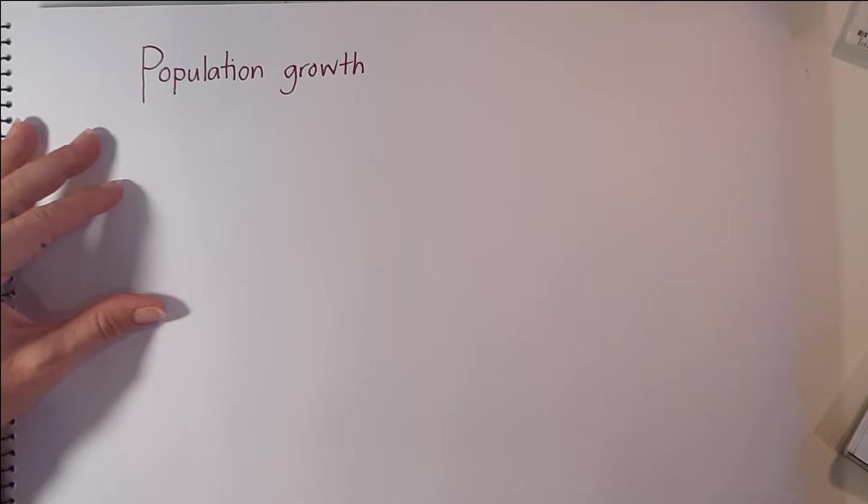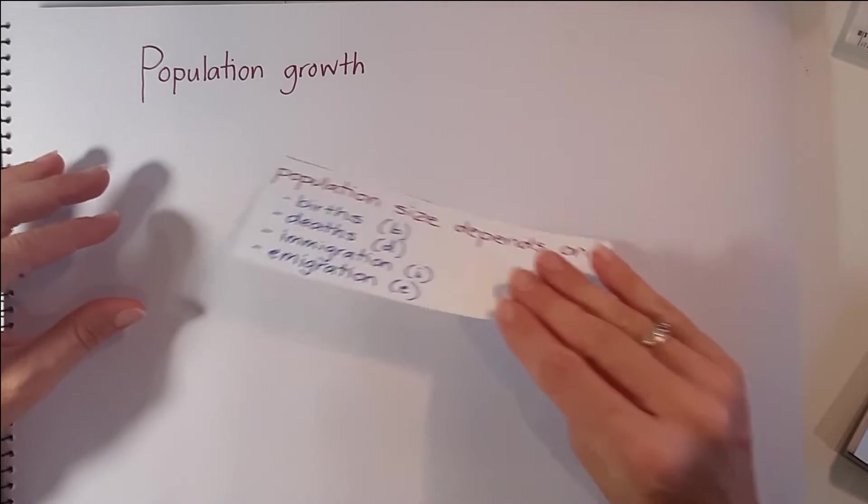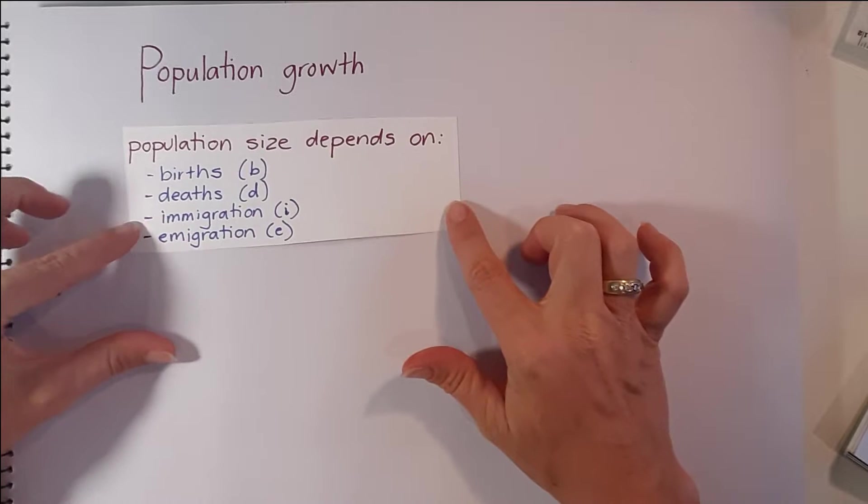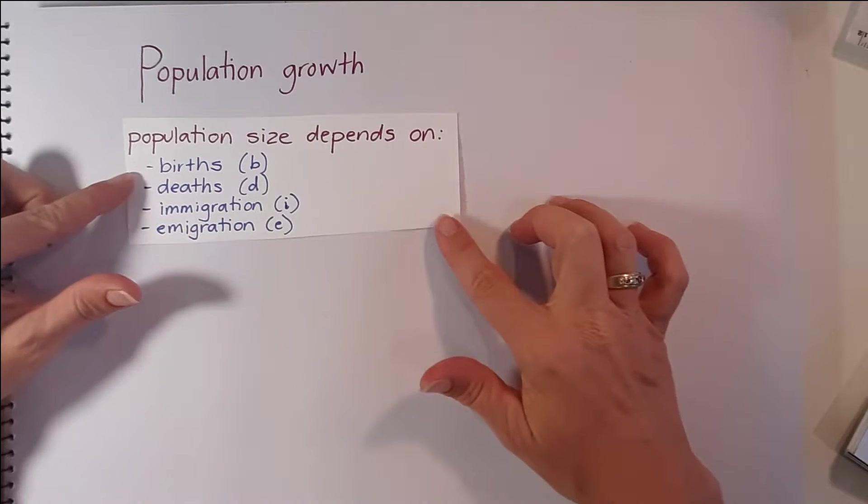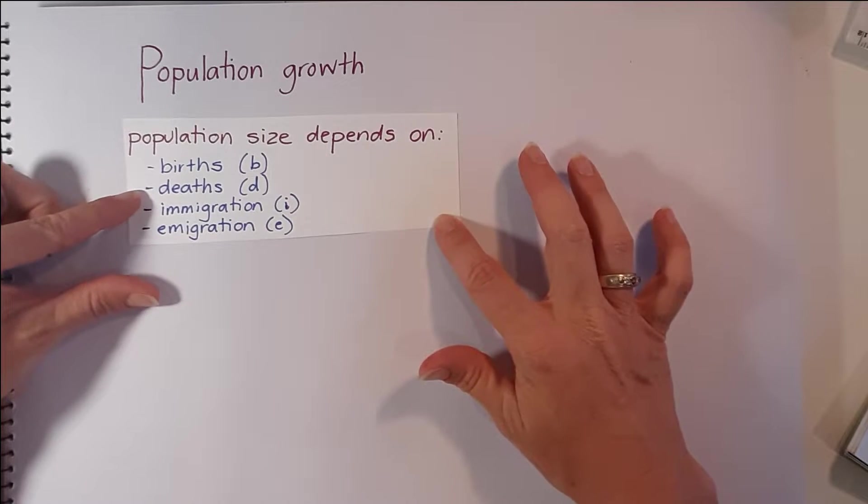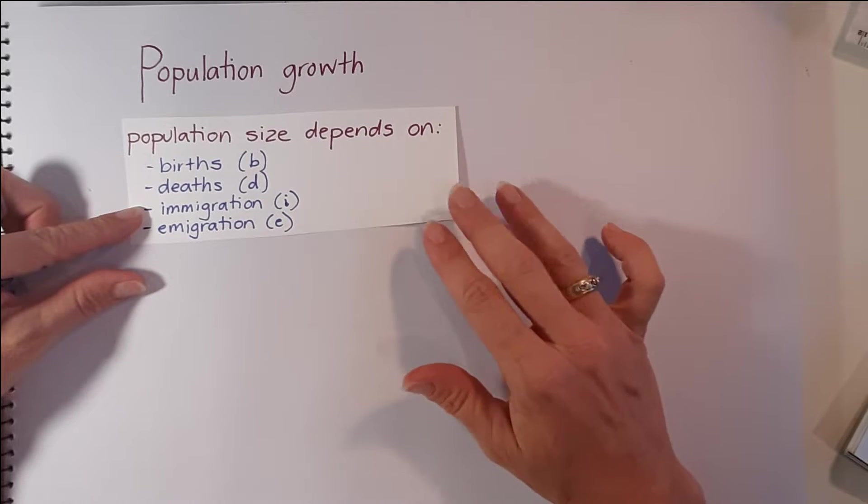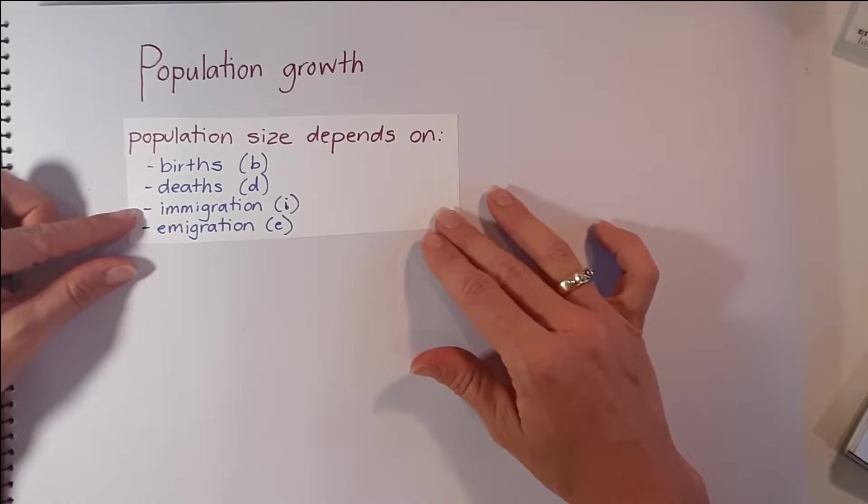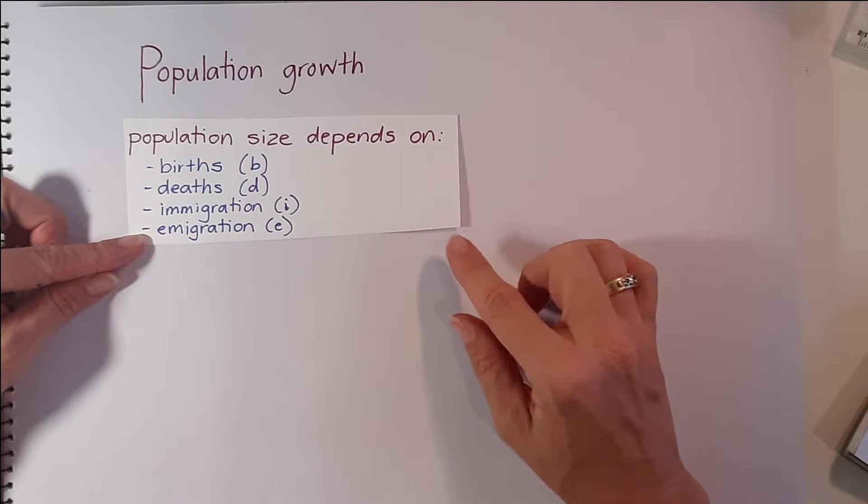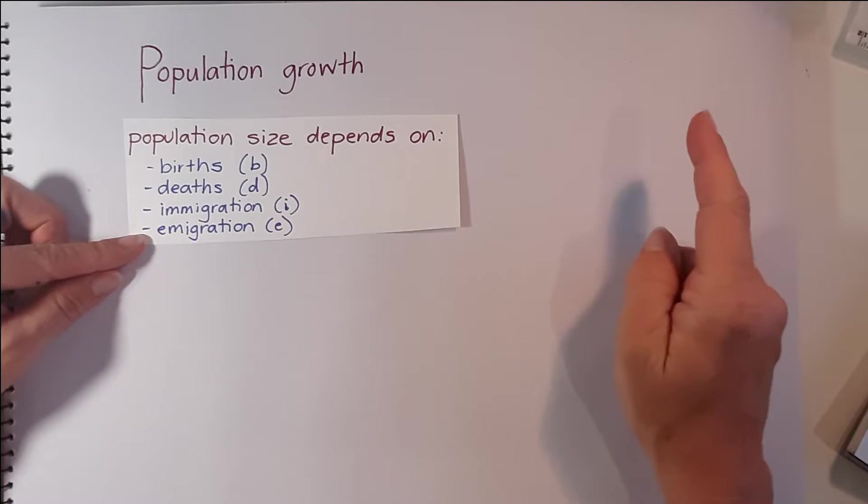The size of a population depends on a number of factors. Population size depends on the number of births, the number of deaths, the number of individuals moving into an area, also known as immigration, or the number of individuals that are moving out of an area, or emigration.